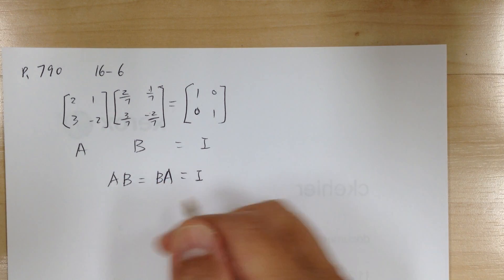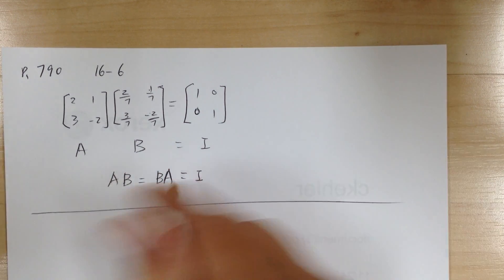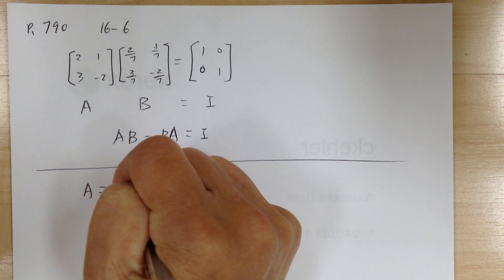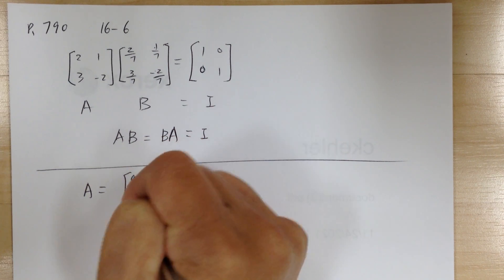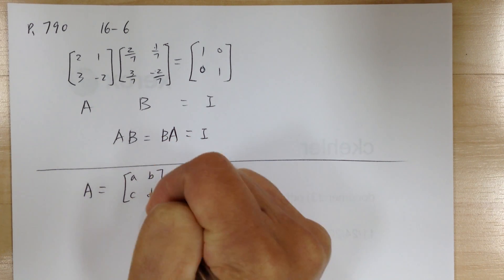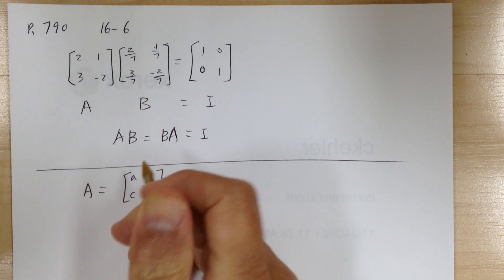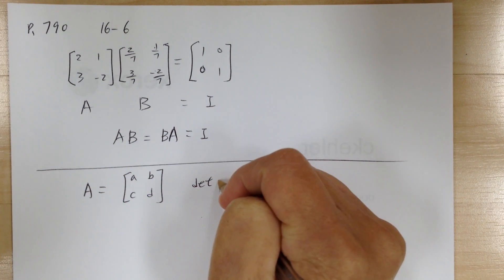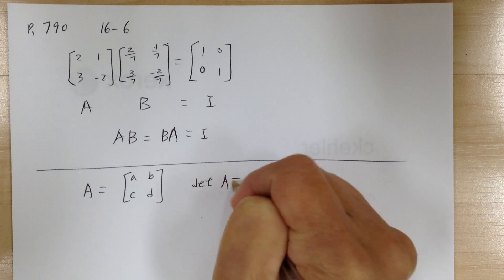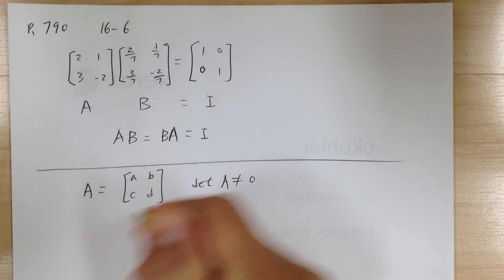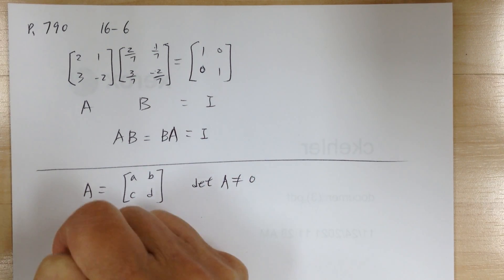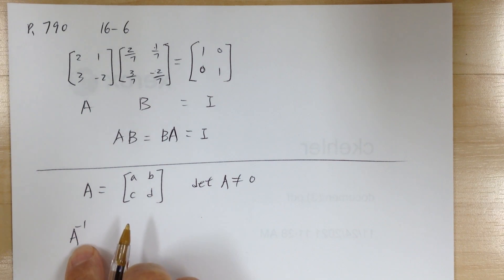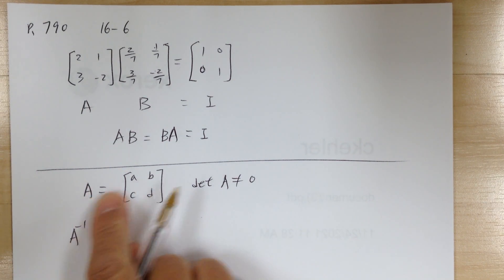Inverse matrices are used to solve systems of equations. At the bottom of page 790, if A equals a, b, c, d — the determinant of A cannot equal zero. The superscript negative one on A means it's the inverse, not a power of negative one.